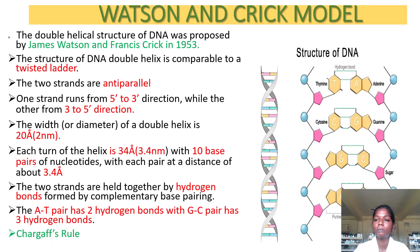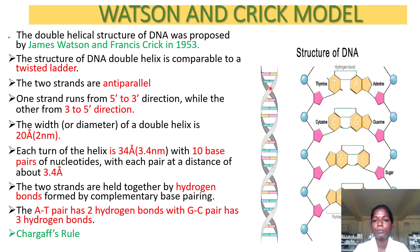Now let's move into the Watson-Crick model of DNA. The double helical structure of DNA was proposed by James Watson and Francis Crick in 1953 — that is why this model is named the Watson and Crick model. The two strands of DNA are anti-parallel. One strand starts at 5-prime and ends at 3-prime, while the other starts at 3-prime and ends at 5-prime, making them anti-parallel.